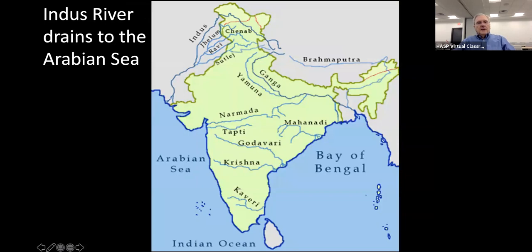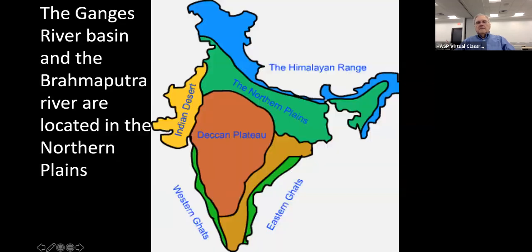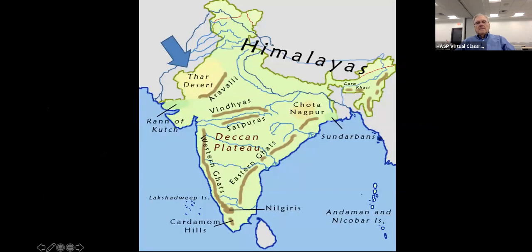The Indus River drains into the Arabian Sea. We will notice there are five rivers up here when we study Pakistan later on. The Ganges joins with the Brahmaputra, which comes across the top of the Himalayas and down into the Bay of Bengal. The Ganges and the Deccan Plateau drain into the Bay of Bengal. The northern plains is where the Ganges River happens to be, as well as the Assam over here.